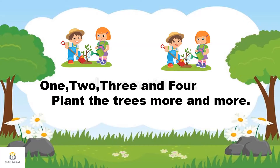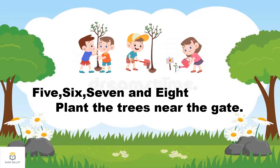One, two, three and four — plant the trees more and more. One, two, three and four — plant the trees more and more. The poet is telling us to plant more and more trees around us.